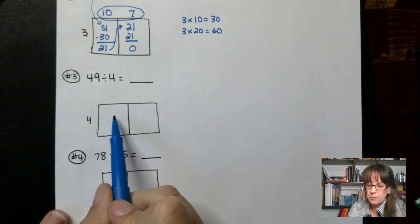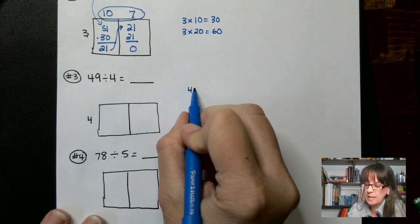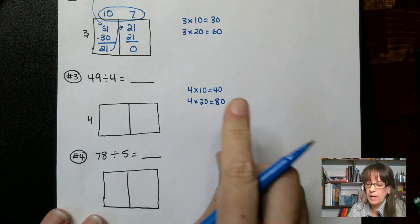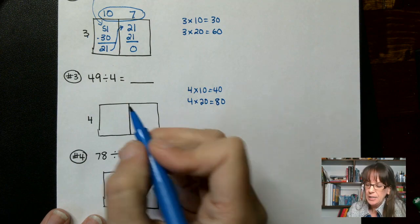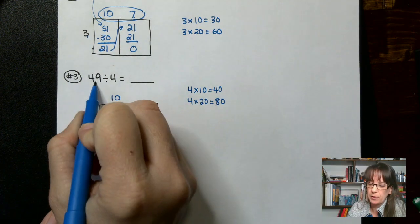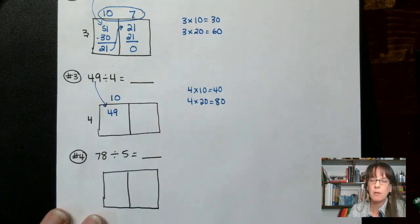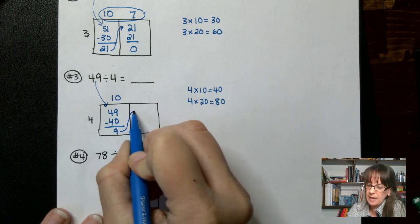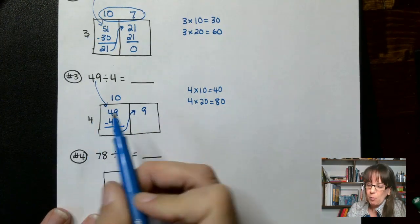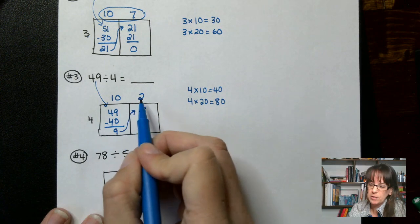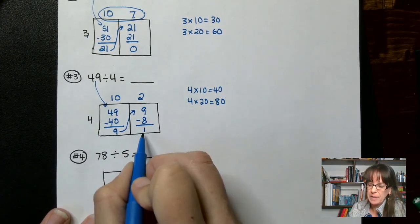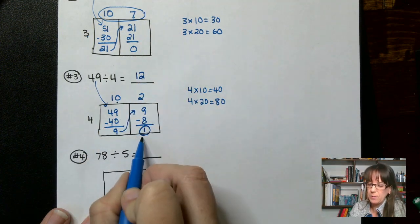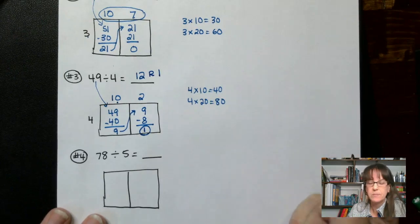Let's look at the next one. 49 divided by 4. This is our 10s column. 4 times 10 is 40. 4 times 20 is 80 — already too high. We only need to get to 49, so 4 times 10. 4 times 10 is 40, which leaves us with a remainder of 9. 4 goes into 9 two times — 4 times 2 is 8 — so this time we have a remainder of 1. We add them together: 12 remainder 1.